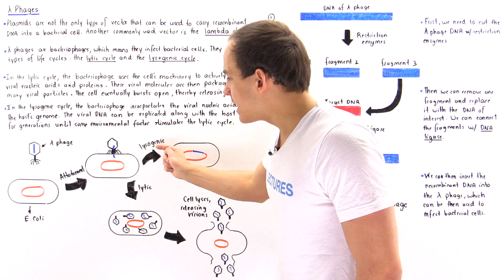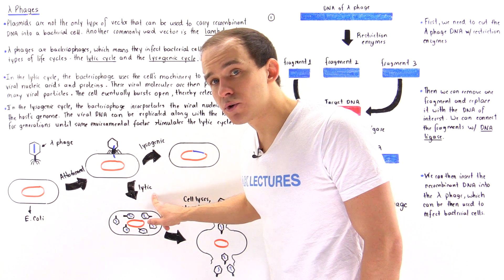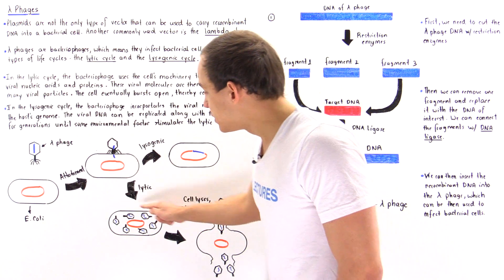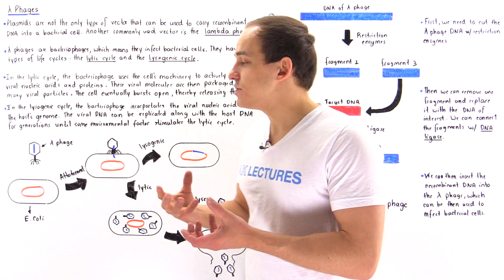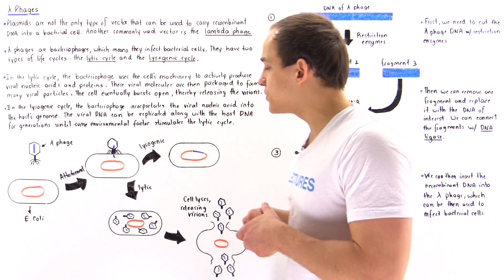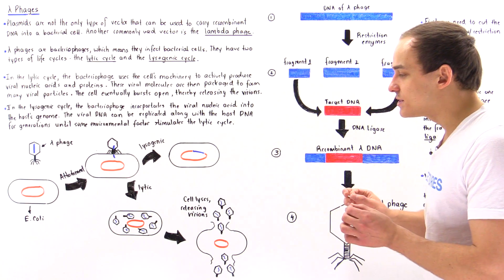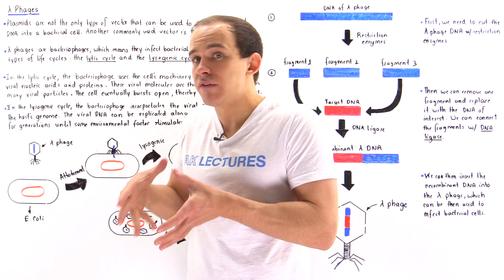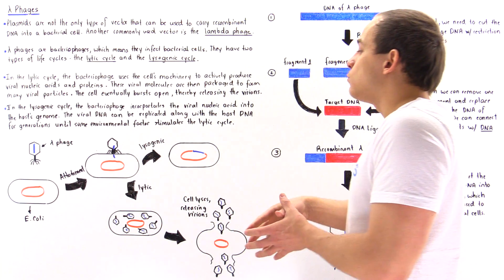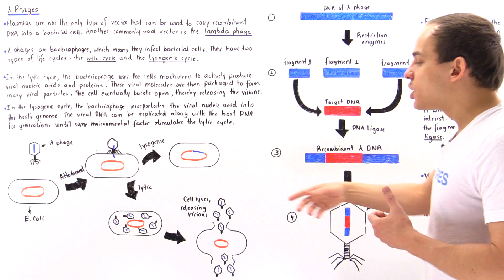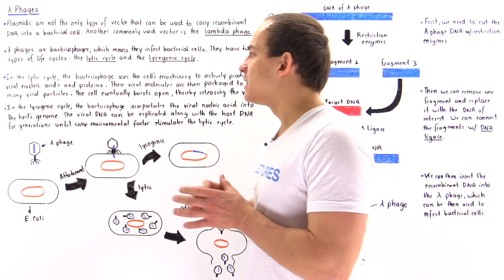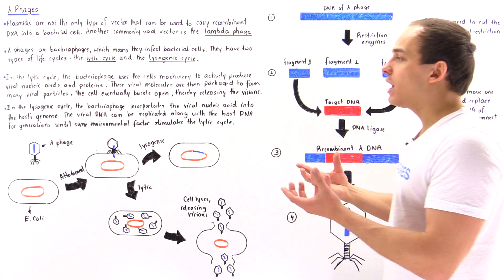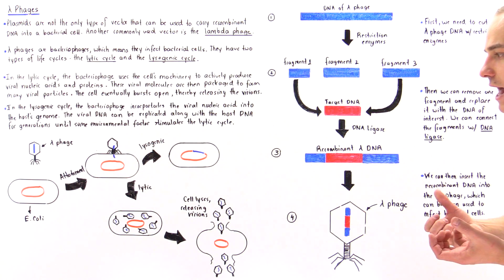On the other hand, the phage can also take a lytic approach. In the lytic pathway, the cell basically turns into a factory that produces many viruses, and eventually when the cell cannot hold all those viruses, it will break open — it will lyse — releasing all those viruses to the outside, where they can go on and infect other bacterial cells.